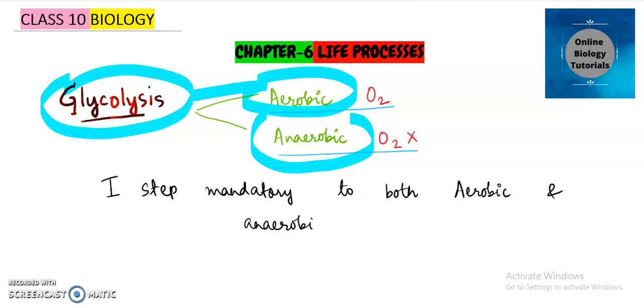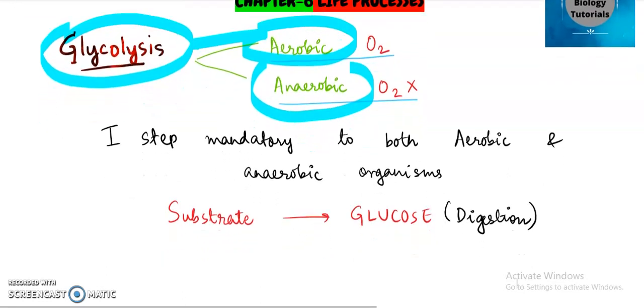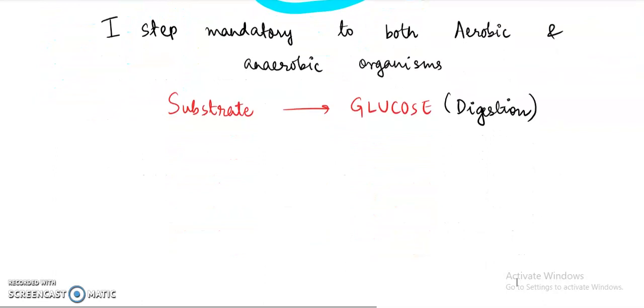It is definitely going to occur in both the organisms. And you know that glycolysis starts with a substrate. Glycolysis starts with a substrate, means a reactant for this is glucose. And where did this glucose come from? It has come by the process of digestion. In digestion we have seen that polymers were converted to monomers, so glucose is one of the monomers.